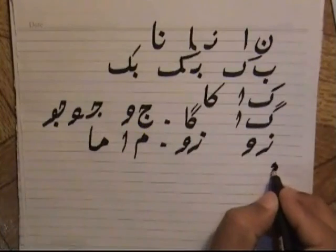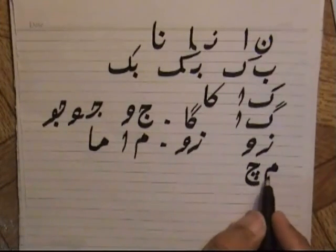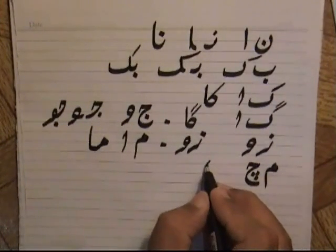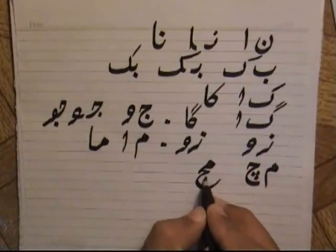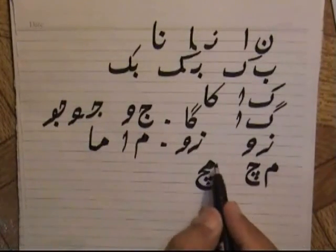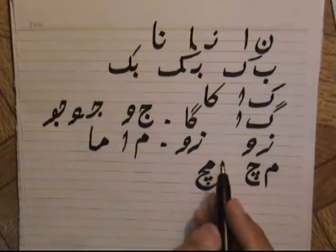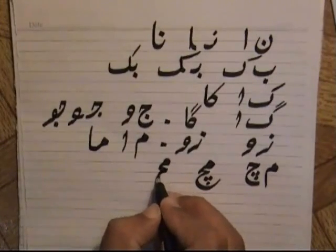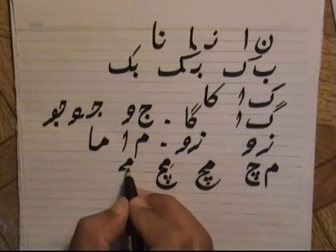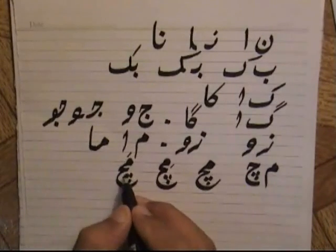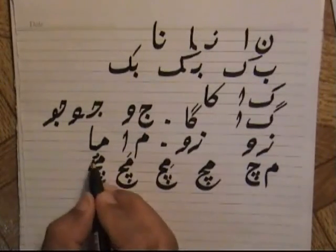Then meem and chhe — both are connectors, so meem and chhe will be written together as 'much'. If it is meem with zabar, chhe: 'much'. If it is meem with zer, chhe: 'mich'. If it is meem with pesh, chhe: 'much'.